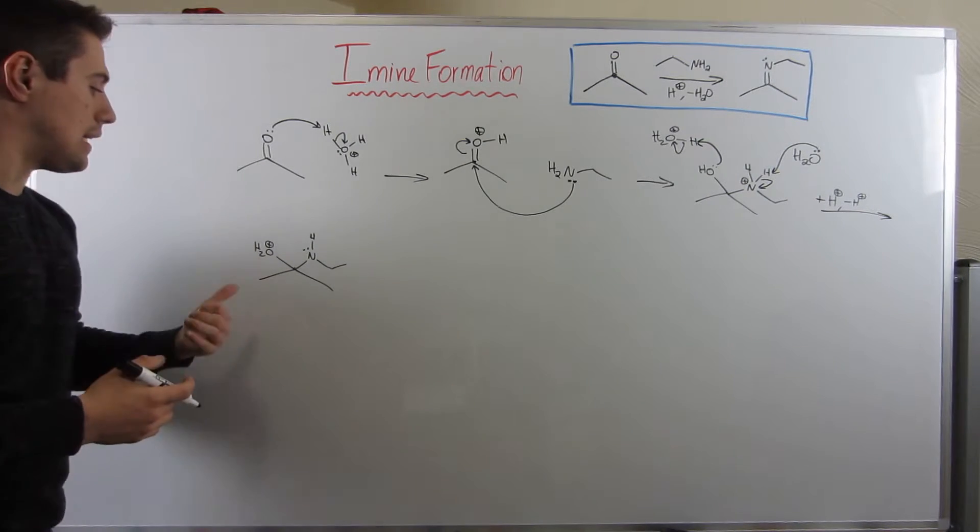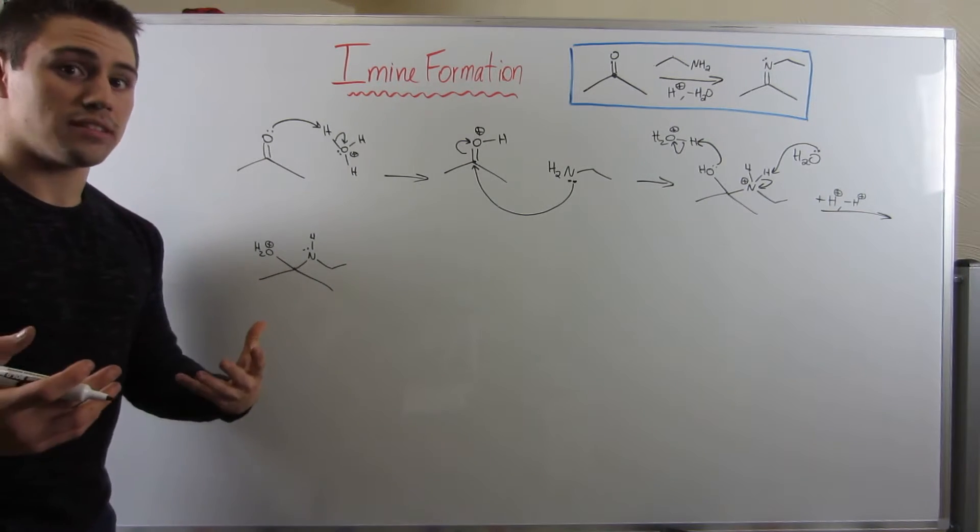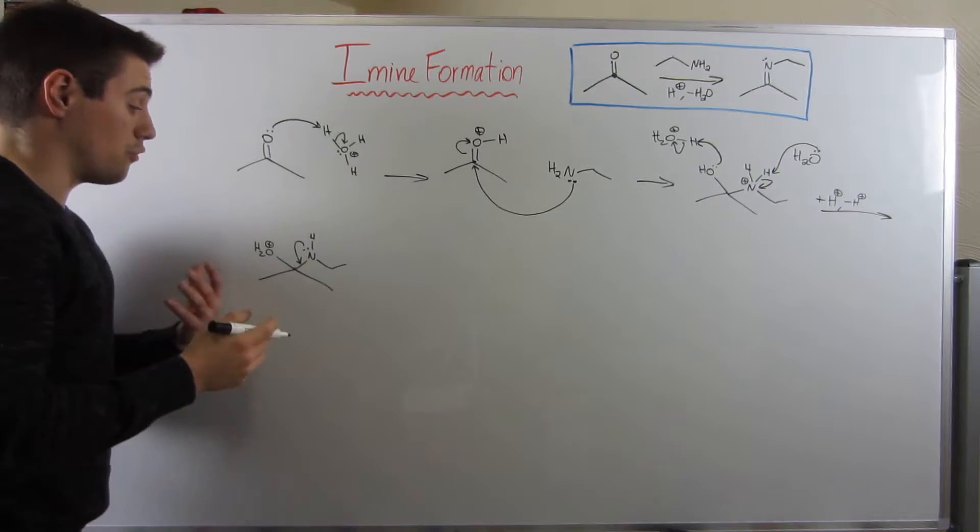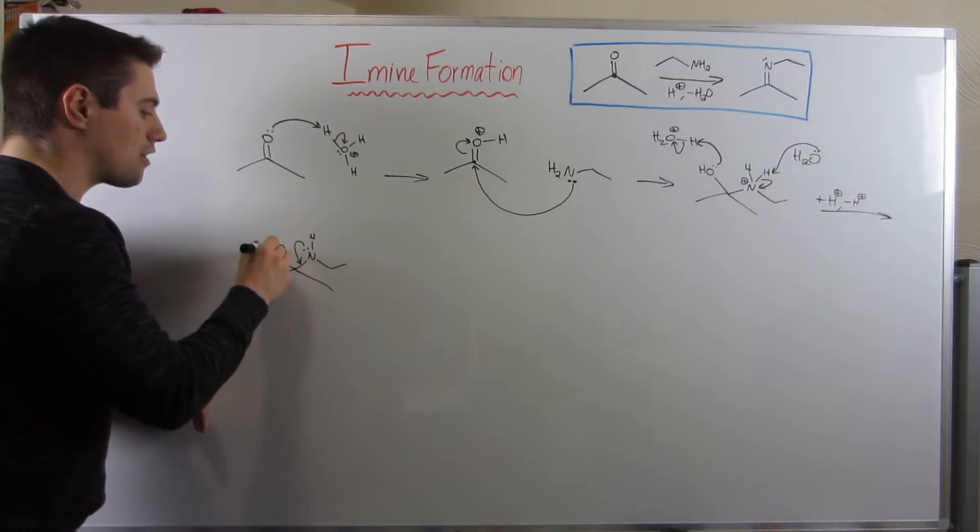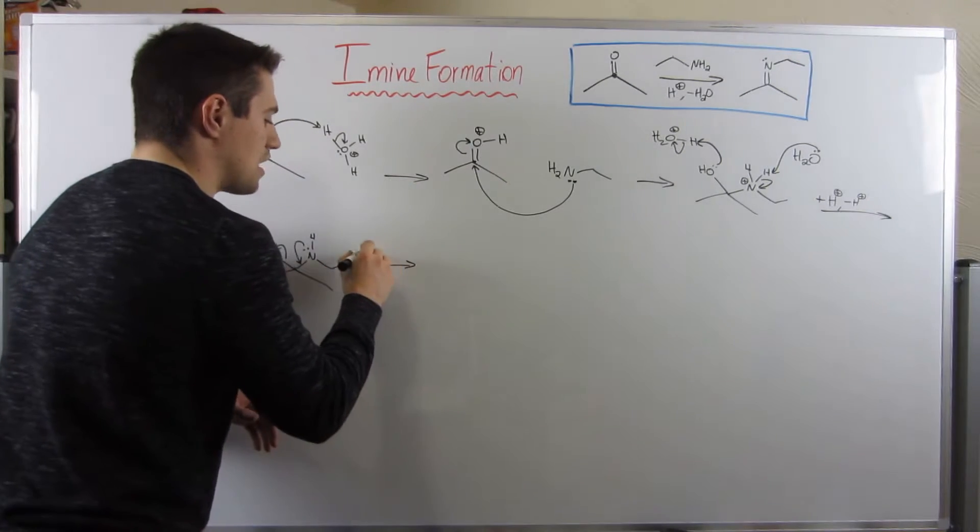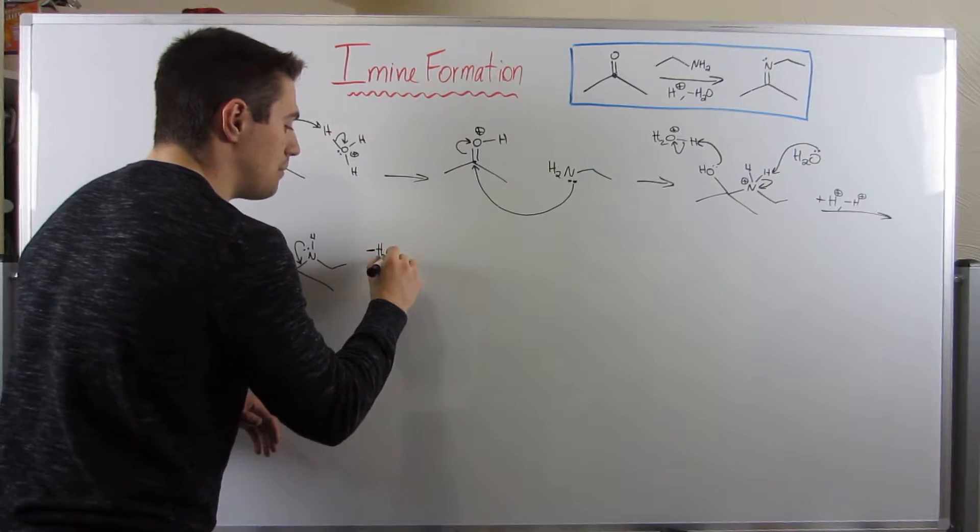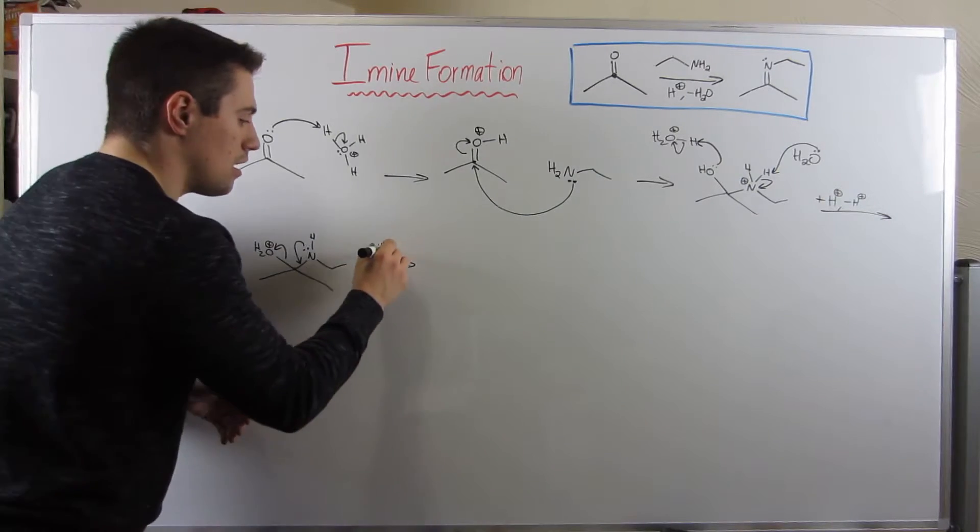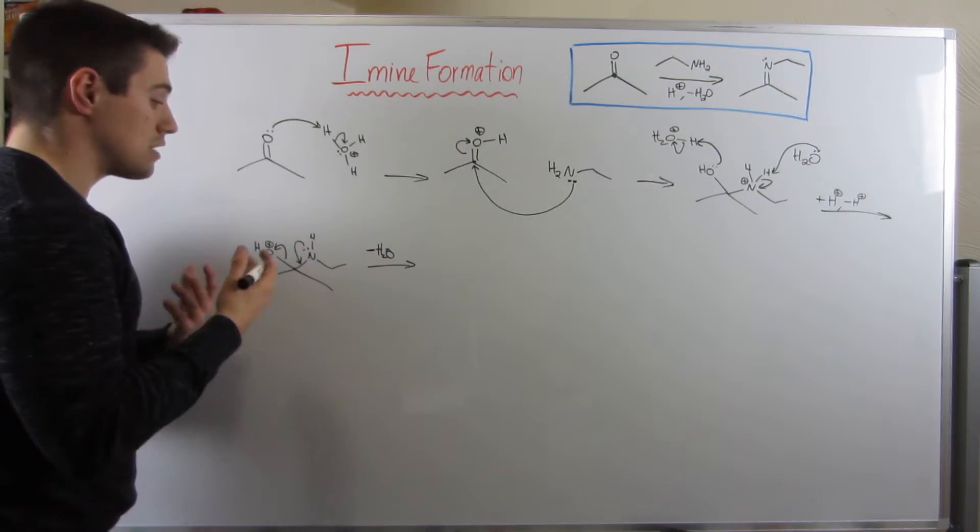So what's our next step? He wants to leave. Let's give him a reason to. So if we swing these electrons down, form a double bond, we can kick off that water. And remember, this is that really good minus H2O step, which is good entropically, it's good for entropy.